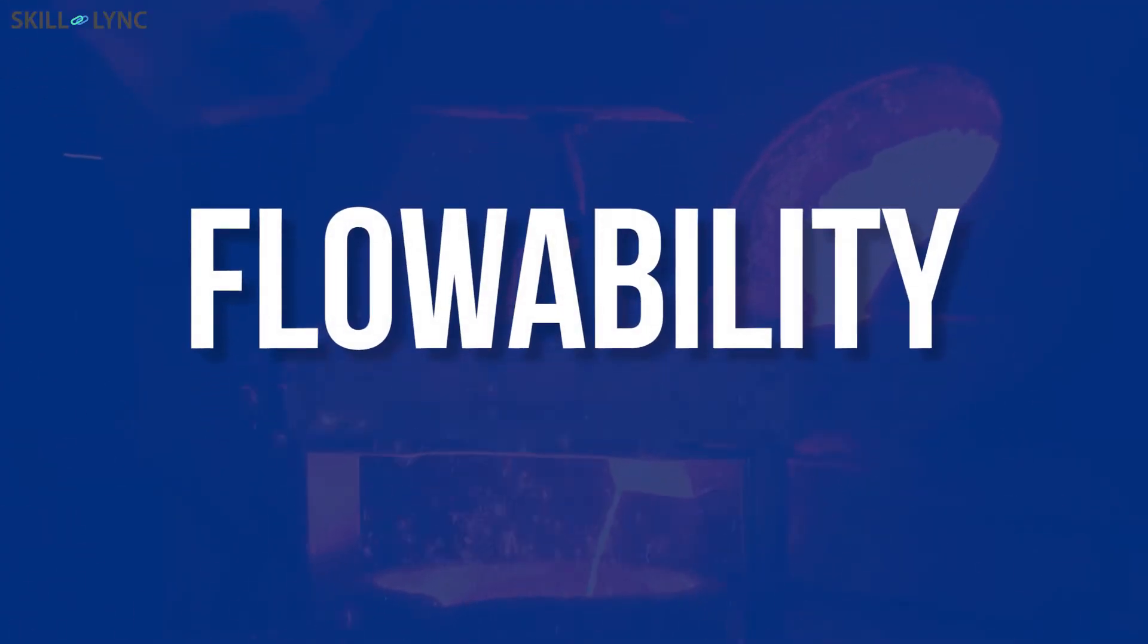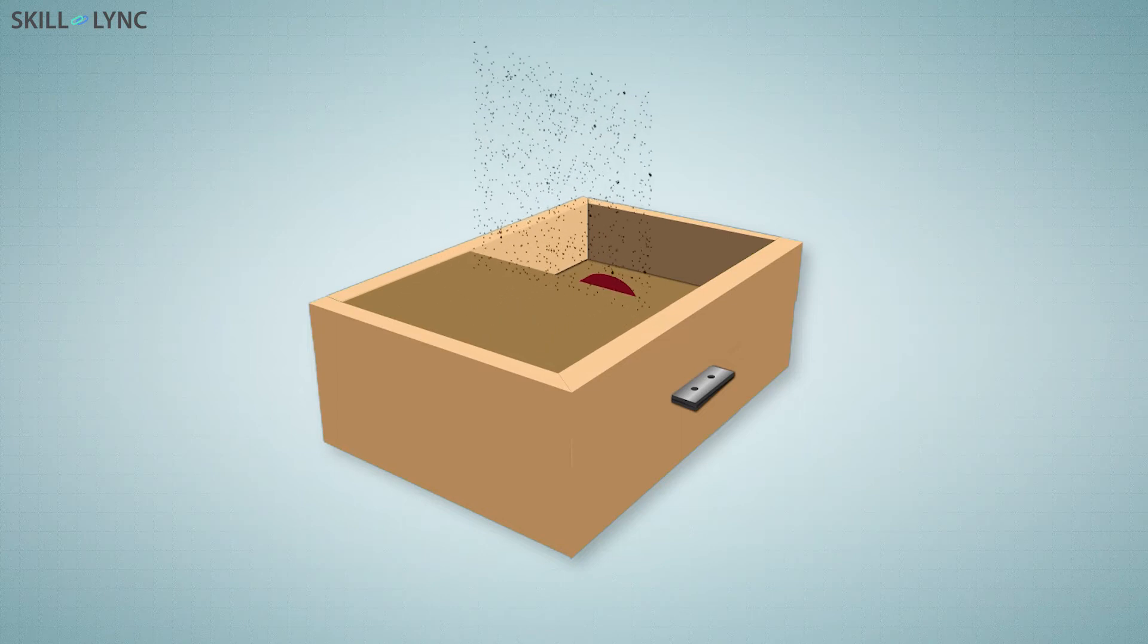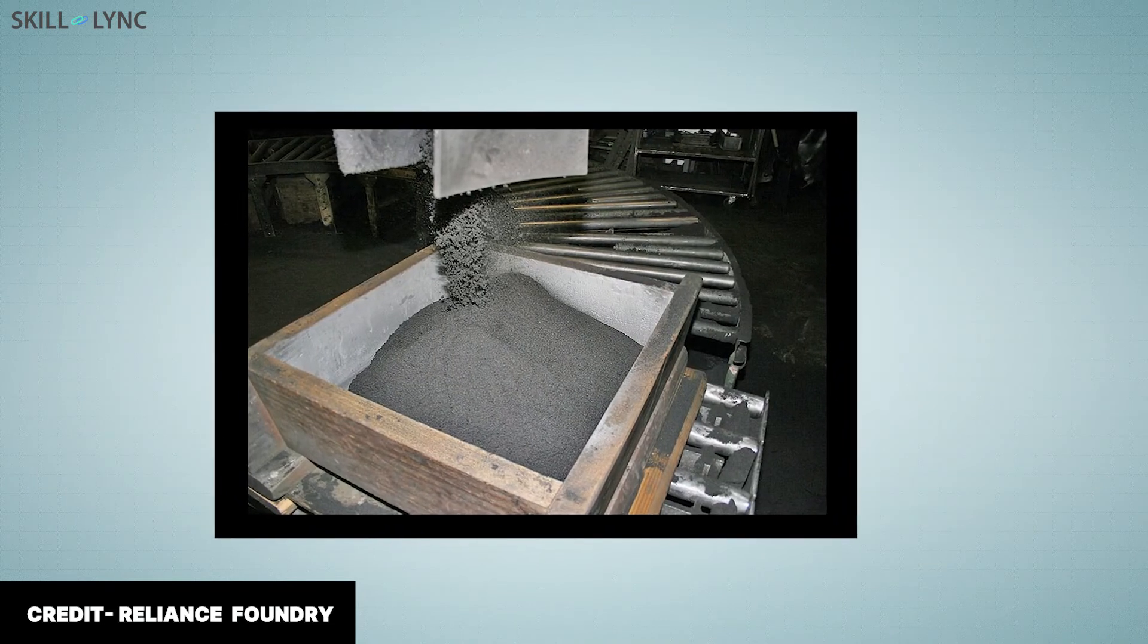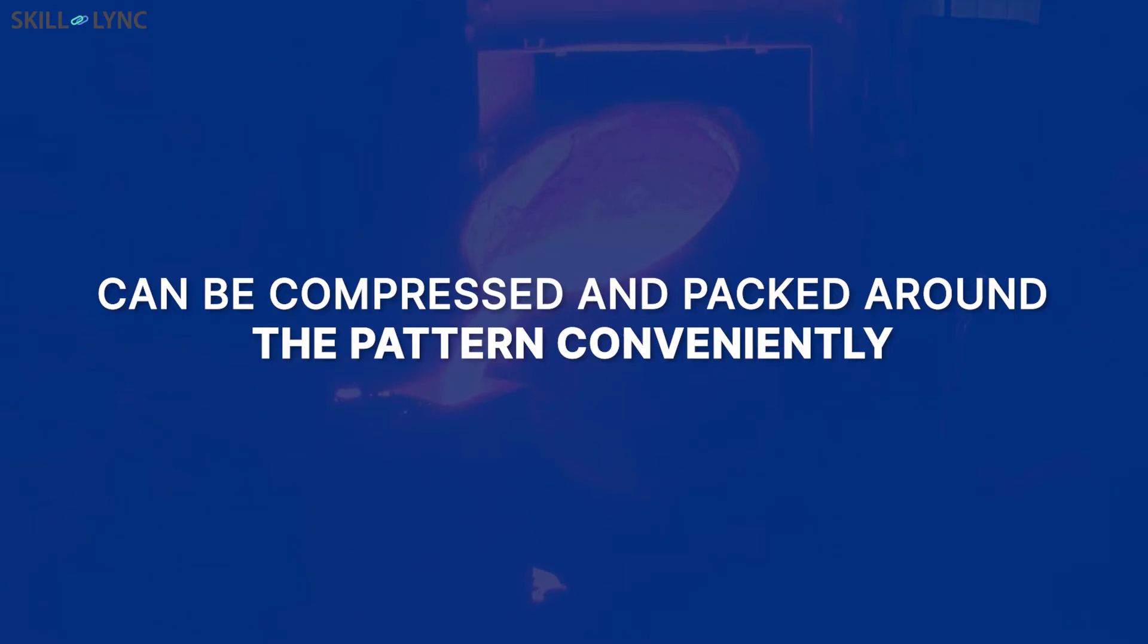Now let's move on to the next property, that is flowability. It is the ability of molding sand to flow and show fluidic behavior when it is rammed. Due to this property of molding sand, it can fill the entire molding box and take its shape easily. Hence, the sand can be compressed and packed around the pattern conveniently.